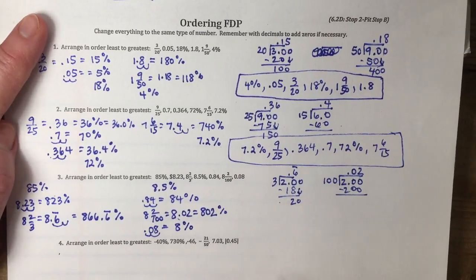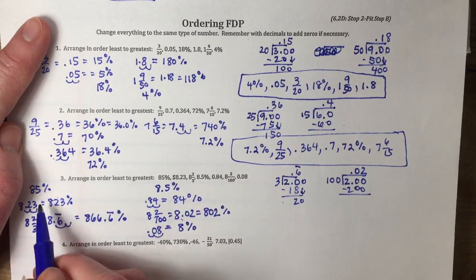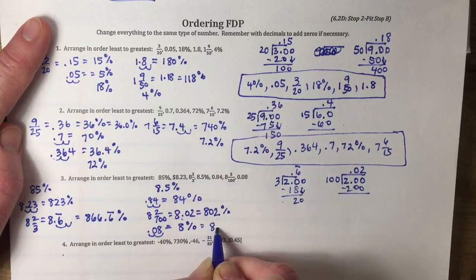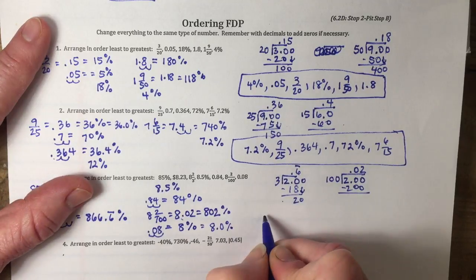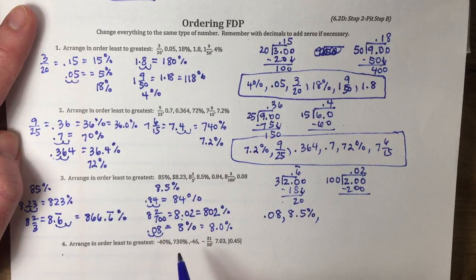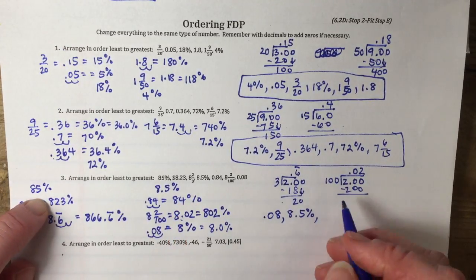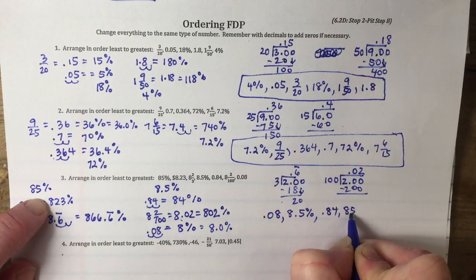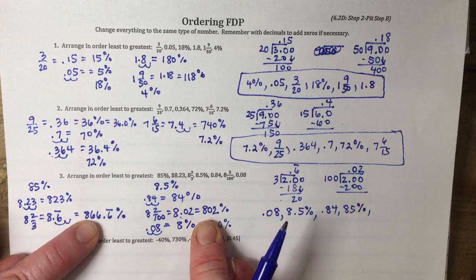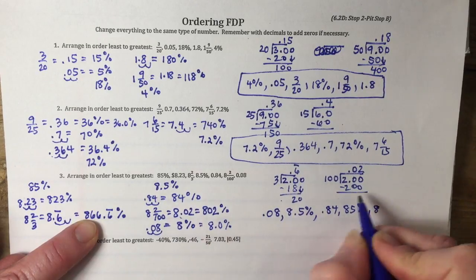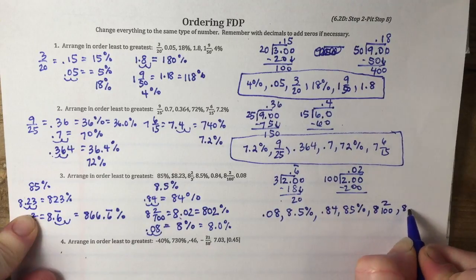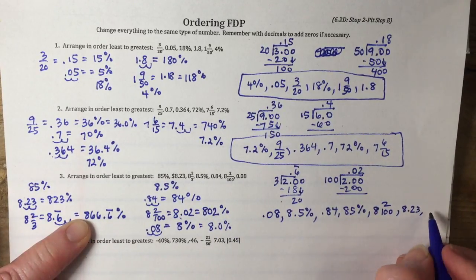Putting these in order least to greatest, I'm looking for the smallest percent. I have 8.5% and 8% — rewriting as 8.0%, I can see 8% is smaller, so 0.08 comes first, then 8.5%. Next I have 84% and 85%, so 0.84 comes next, then 85%. Now for percents over 800: the smallest is 802% which started as 8 and 2/100, then 823% which was 8.23, and finally 866.6 repeating percent which is 8 and 2/3.